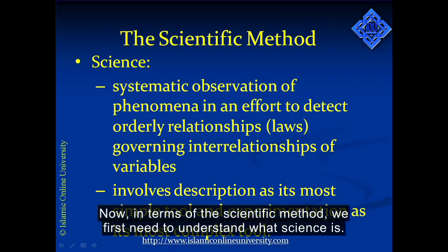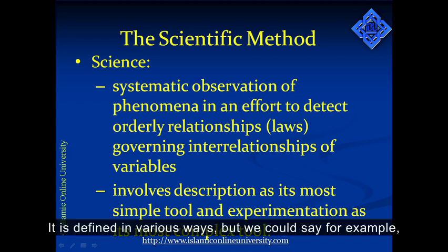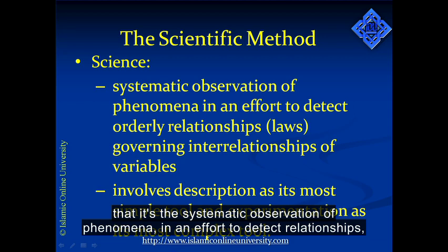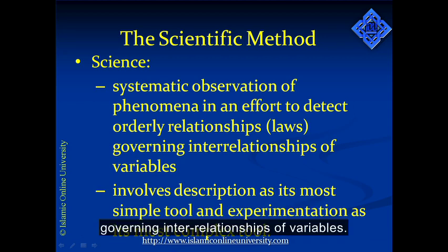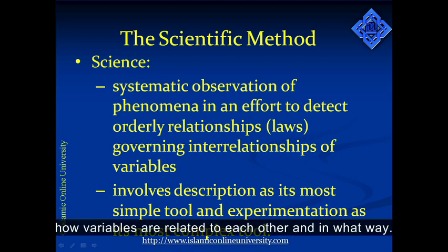In terms of the scientific method, we first need to understand what science is. It is defined in various ways, but we could say that it's the systematic observation of phenomena in an effort to detect relationships and governing interrelationships of variables. We're basically looking at how variables are related to each other and in what way.